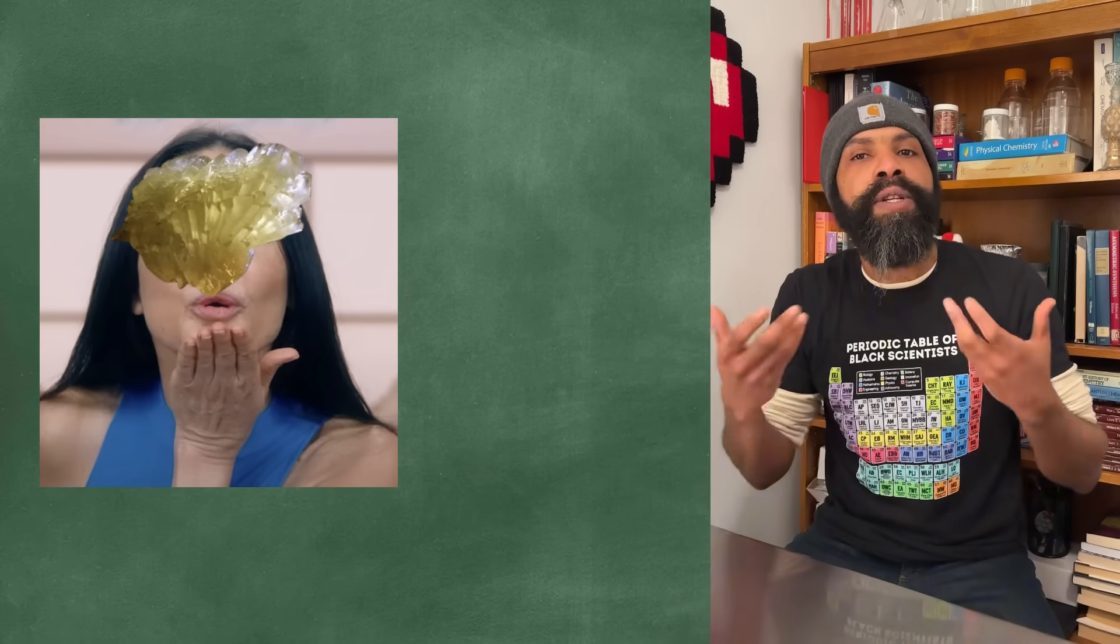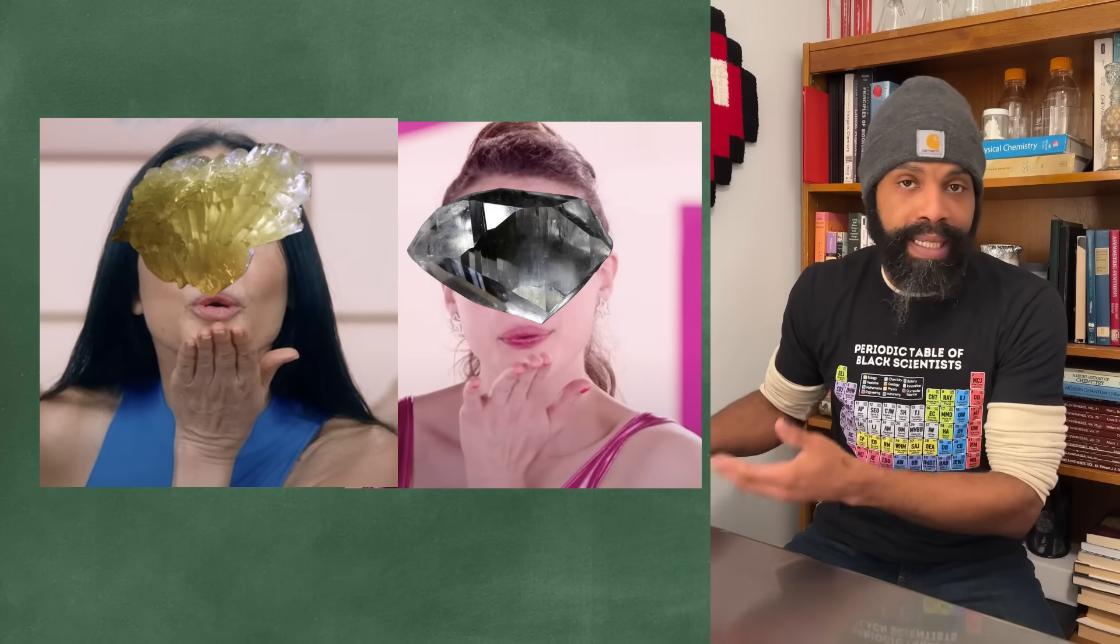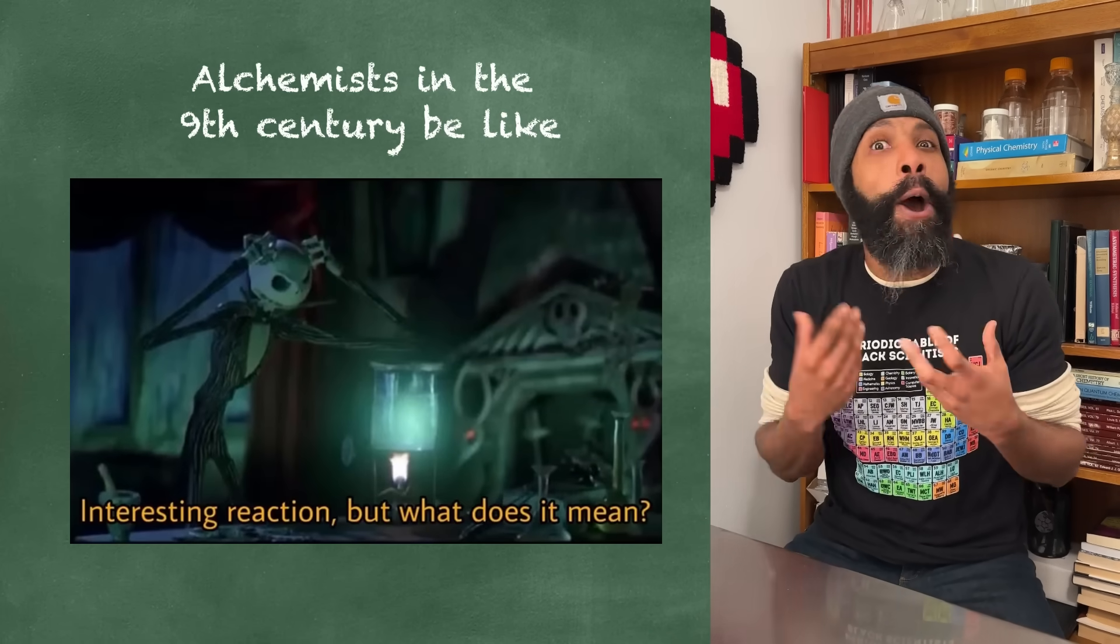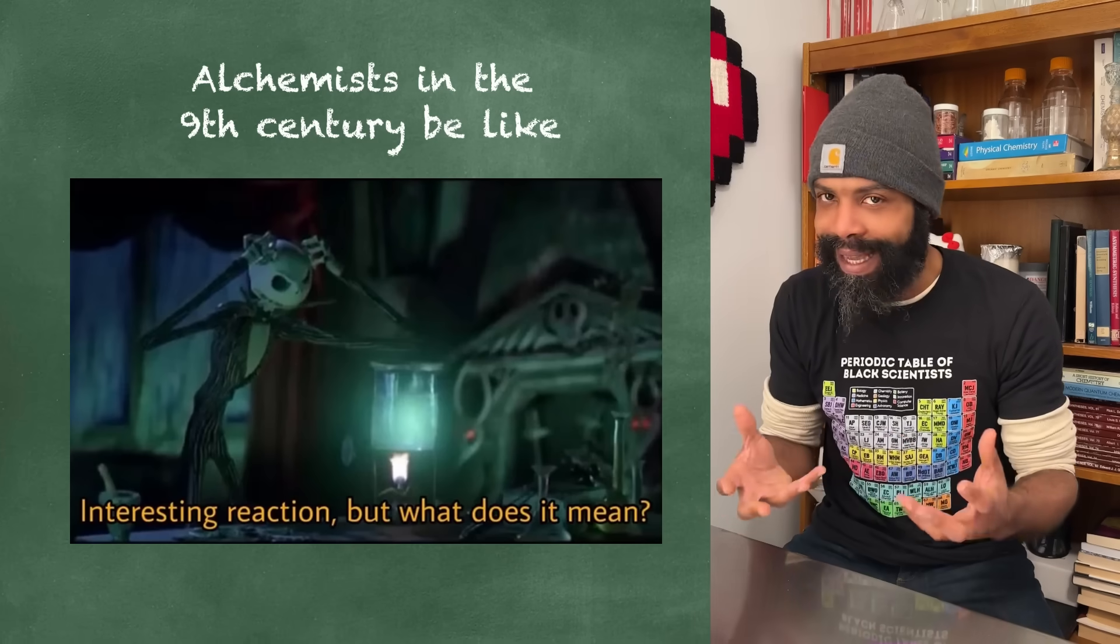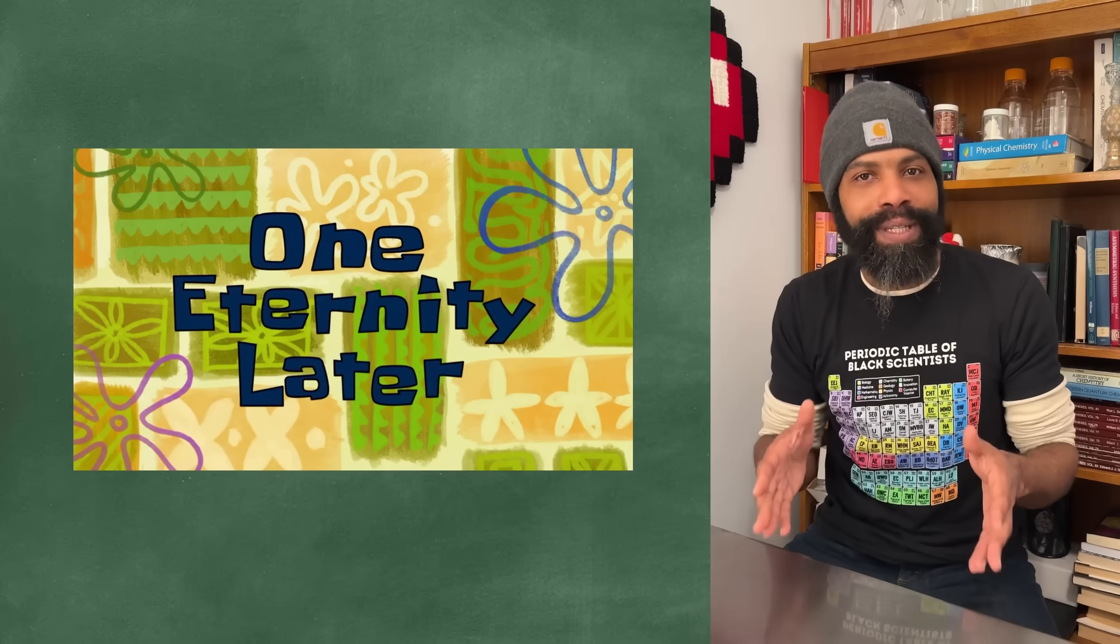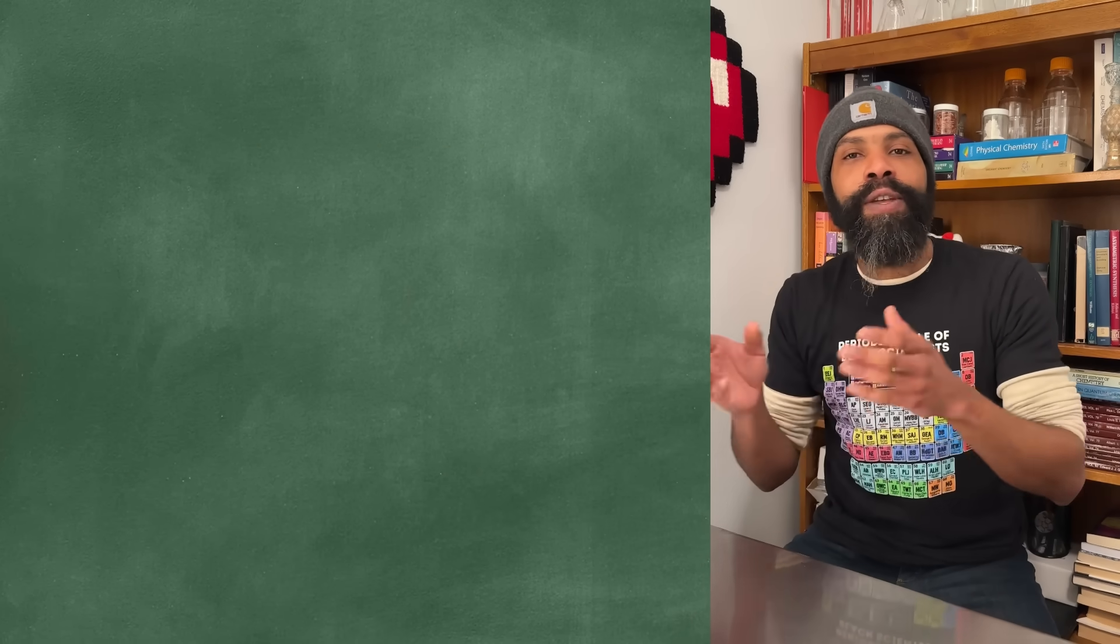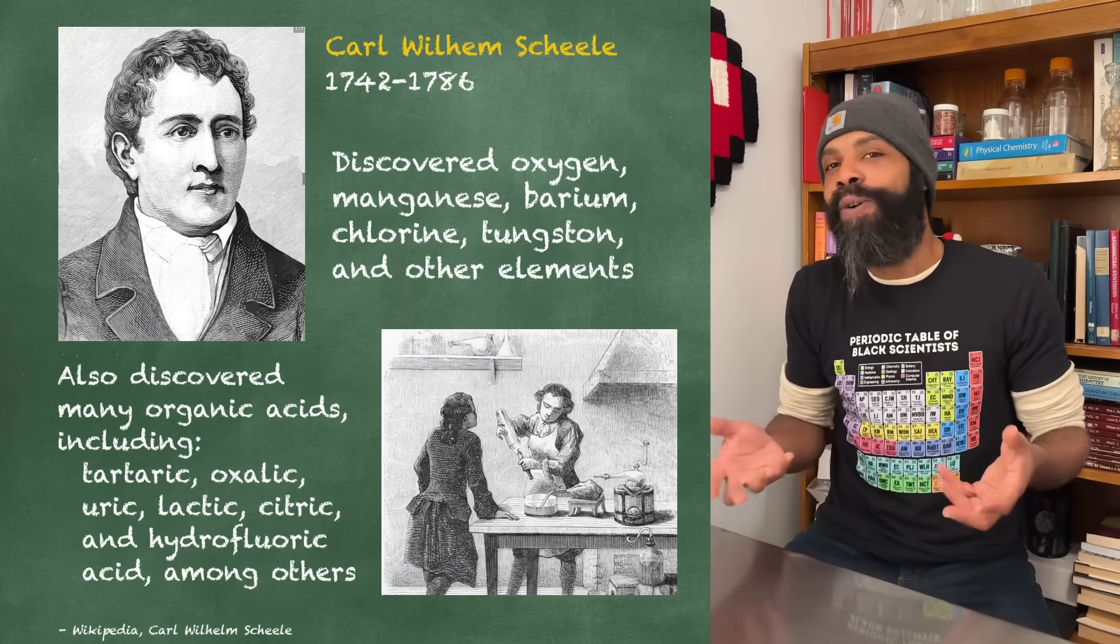I digress. The substance he was able to describe matches up with what we know as citric acid today, but at the time we just didn't really know enough about chemistry as a hard science. He was an alchemist, so the information about citric acid just kind of ended up not getting used for almost an exact thousand years.